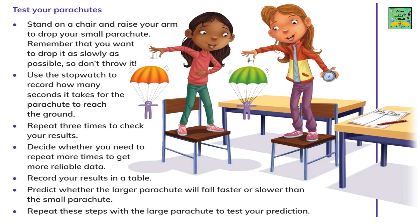For testing your parachutes, stand on a chair and raise your arm to drop the small parachute. Remember that you want to drop it as slowly as possible. Use a stopwatch to record how many seconds it takes for the parachute to reach the ground. Repeat this 3 times to check your results. Decide whether you need to repeat more times to get more reliable data. Record your results in a table. Then predict whether the larger parachute will fall faster or slower than the small parachute. Repeat these steps with the large parachute to test your prediction.